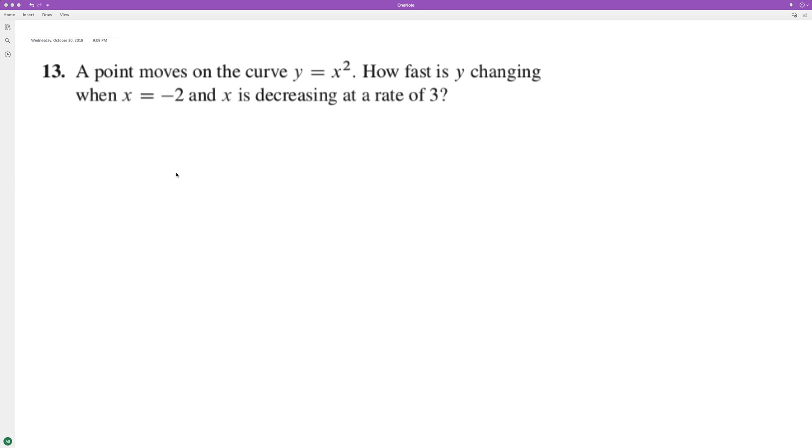So a point moves on the curve y equals x squared. How fast is y changing when x equals negative 2 and x is decreasing at a rate of 3?